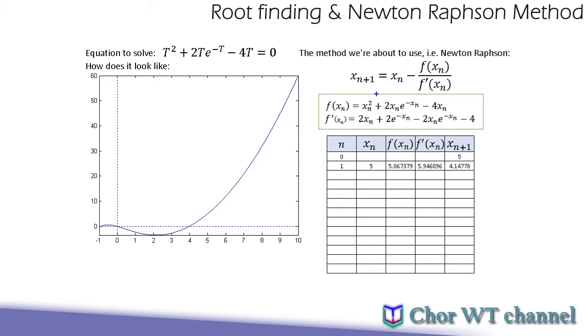For this example, we are interested to find t and if the t here is now replaced with xn, so basically the function of xn will be xn² + 2xn⋅e^(-xn) - 4xn. While the first derivative will be 2xn + 2e^(-xn) - 2xn⋅e^(-xn) - 4.